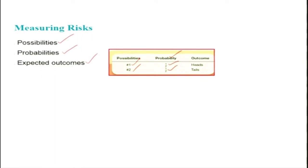So the outcome is heads and the other outcome is tails. There are two possibilities, each with probability 0.5, and the outcomes are heads and tails. This is a simple example using coin tossing that we are all familiar with.